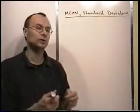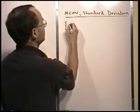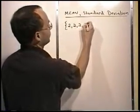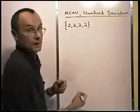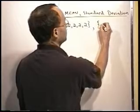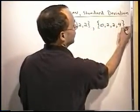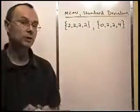So let me just use an example here to try to make some sense of this. Let's say we had a set of data that looked like this: 2, 2, 2, 2. And another set of data that looked like this: 0, 2, 2, 4. I wanted to compare these.